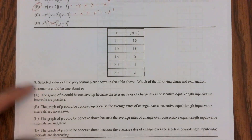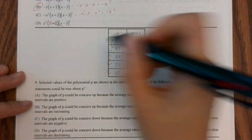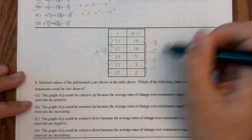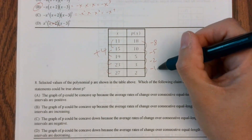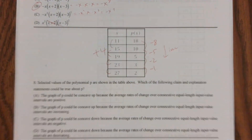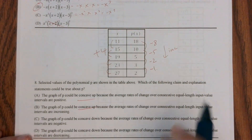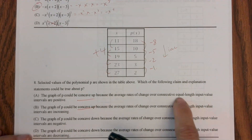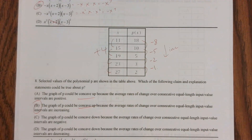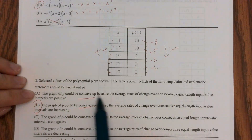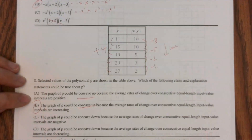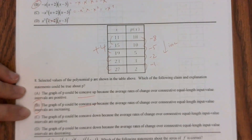Number eight: concave up or concave down from a table. First, check that the input increases by equal intervals — yes, all by four. Now look at the output: negative five, negative eight, negative five, negative two, negative one. Going from negative eight up to negative five, negative two, negative one — the values are increasing, so the rate of change is increasing, which means concave up. Letter A says average rate of change is positive, meaning positive slope — that doesn't make it concave up. Letter B says rate of change is increasing — same as concave up. Correct.